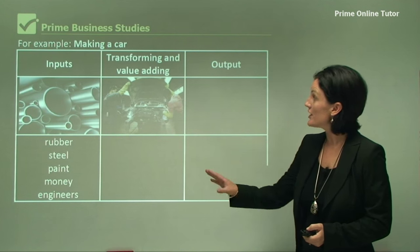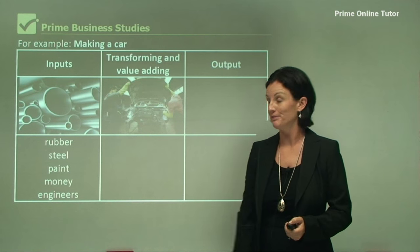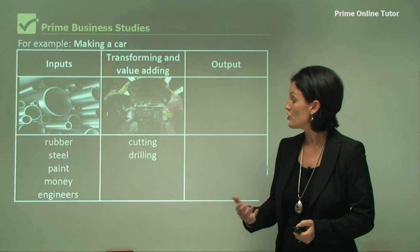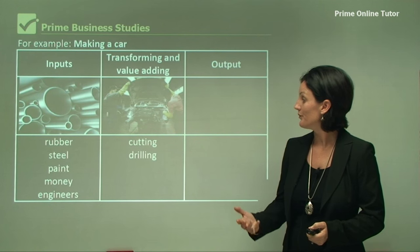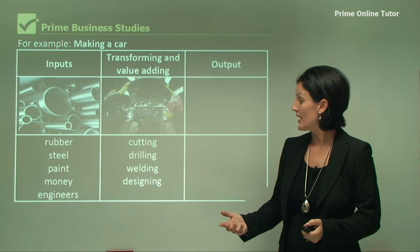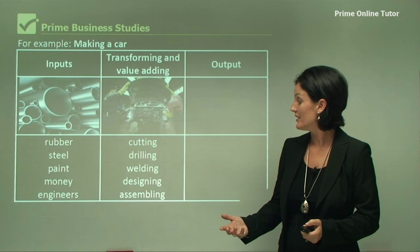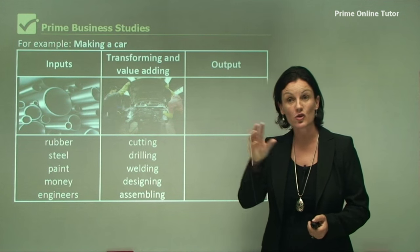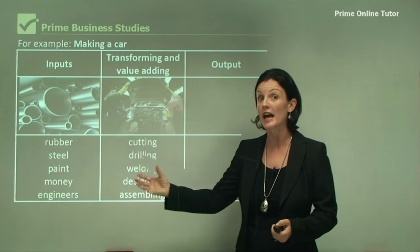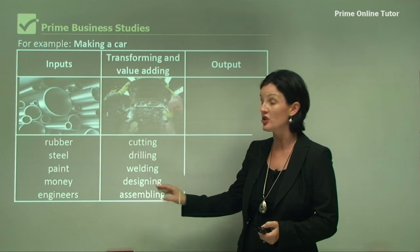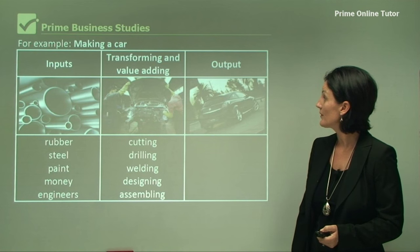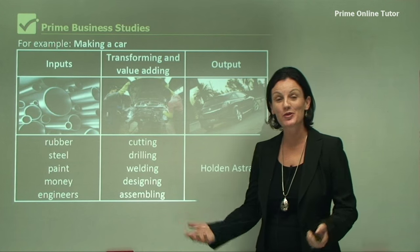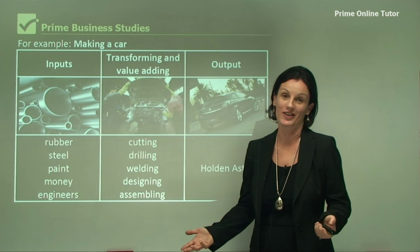Those inputs are then transformed. We need to cut, drill, weld, design, and assemble those inputs. They are then transformed and value is added at this stage. And in this particular example, we have made a car, which is a Holden Astra.